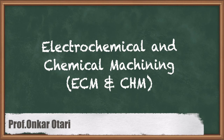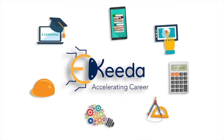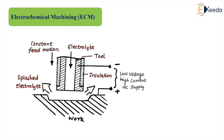Let us start with our next non-traditional machining process: Electrochemical Machining (ECM). Here is a simple diagram of ECM — there is a tool, a workpiece, and through this tool the electrolyte is pumped. By the electrolysis process, this material gets dissolved and is carried away by the electrolyte. At the same time, the tool is given a constant feed motion. The tool is connected to the negative terminal (cathode) and the workpiece to the positive terminal (anode).